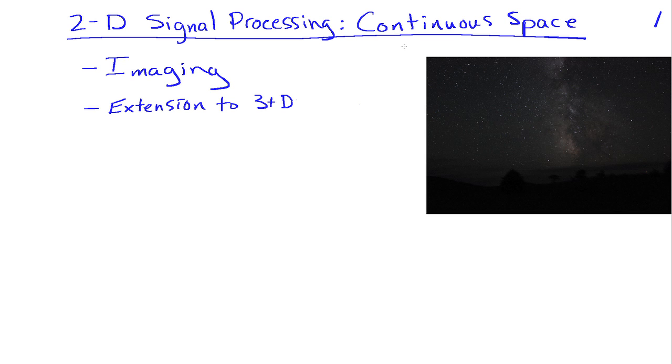So we're going to assume that our two dimensions are space, such as you have in an image. And we're going to look at the continuous case first before we consider sampling in space.